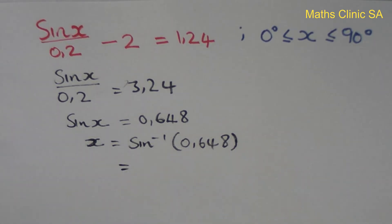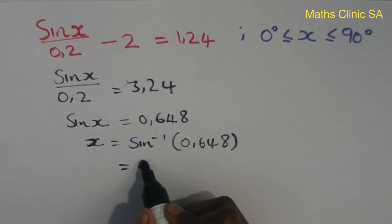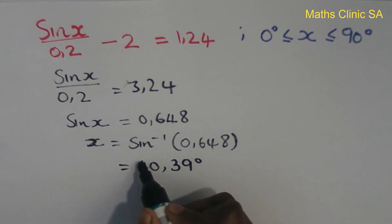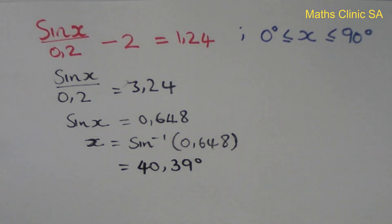Using a calculator with the inverse sine function of 0.648, I get 40 degrees. More precisely, it's 40.39 degrees when rounded to two decimal places.